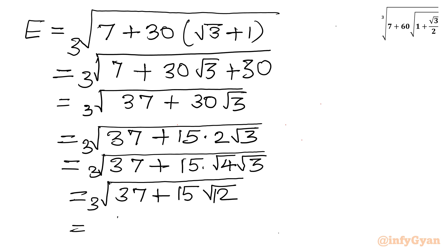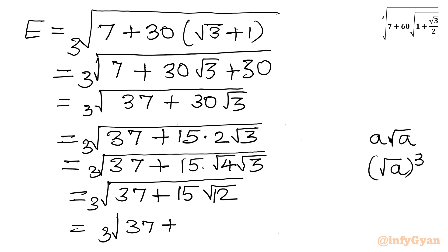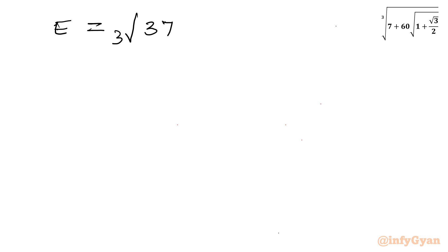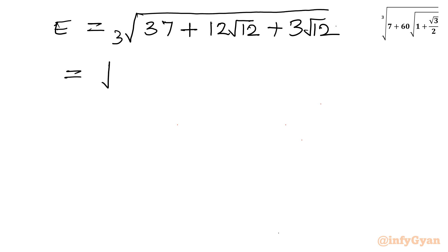Now I have to split the terms so that an a times root a formation appears, so we can write this as root a whole cubed. I will split 15 root 12 as 12 root 12 plus 3 root 12. So E equals cube root of 37 plus 12 root 12 plus 3 root 12. Then I will split 37 as 36 plus 1, giving cube root of 36 plus 1 plus 12 root 12 plus 3 root 12.